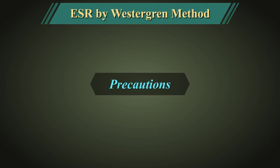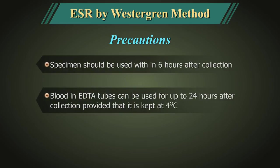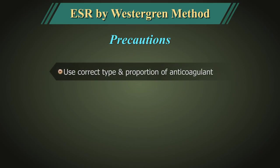Remember the following to avoid errors while performing the test. Specimen used for testing should not be more than 6 hours old after collection. Blood in EDTA tubes can be used for up to 24 hours after collection, provided it is kept at 4 degrees centigrade. Use the correct type and proportion of anticoagulant. Incorrect type of anticoagulant such as calcium oxalate can cause shrinkage of RBCs and decrease sedimentation.